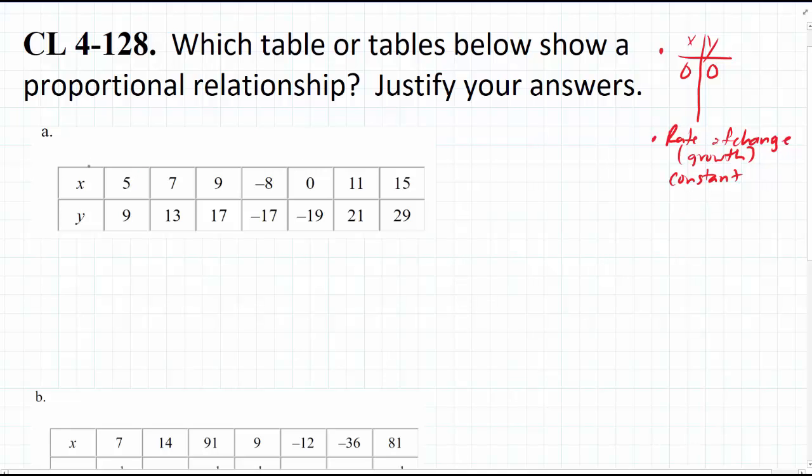Let's take a look at A. I'm just looking through the data. 5, 9, 7, 13, 9, 17, negative 8, negative 17, and oh, 0. Remember, if x is 0, y has to be 0 in a proportional relationship. So right away, because of this, A is not proportional.